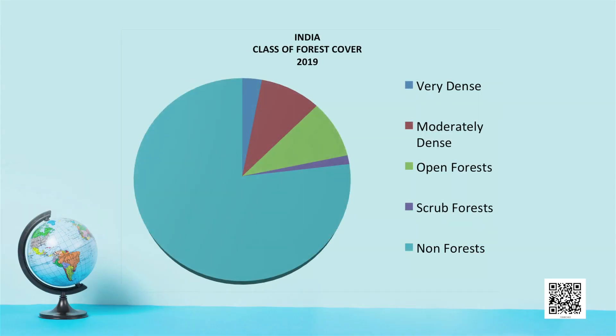Looking at another visual showing the share of different forest classes in 2019, the classes are very dense, moderately dense, open forest, and scrubs. The proportion of very dense forest in India is less, whereas moderately dense forest and scrubs have almost equal shares of around 10 percent each of the total forest area.